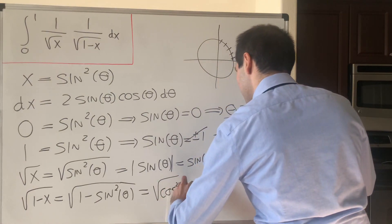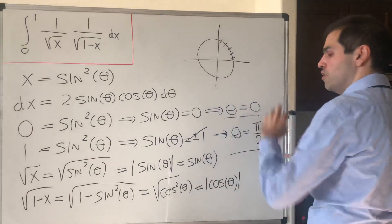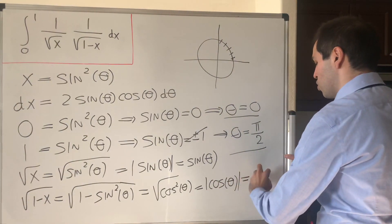And again, it's absolute value of cosine of theta, but because we're in the first quadrant, this is just cosine of theta.